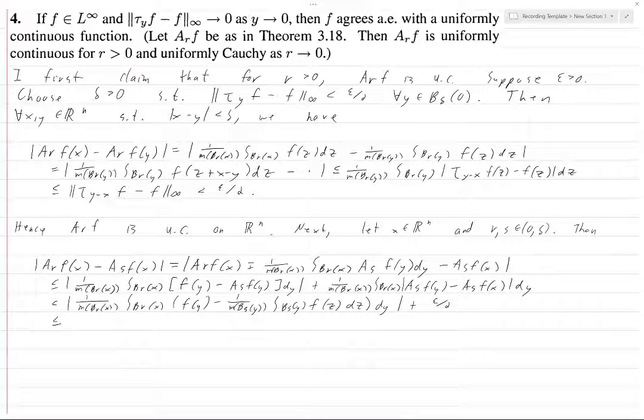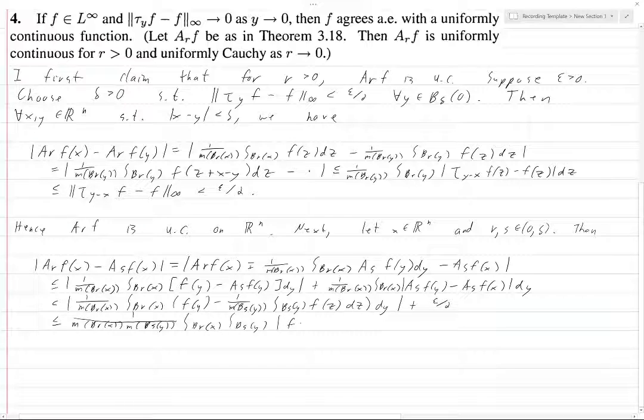And this is less than or equal to, let's bring all the absolute values on the inside. We're going to bring m B_r(x), m B_s(y), this is all going to go on the outside. We're going to have 1 over that. Then we're going to have integral over B_r(x), integral over B_s(y), and then on the inside we're going to have f(y) minus f(z) dz dy, plus epsilon over 2.